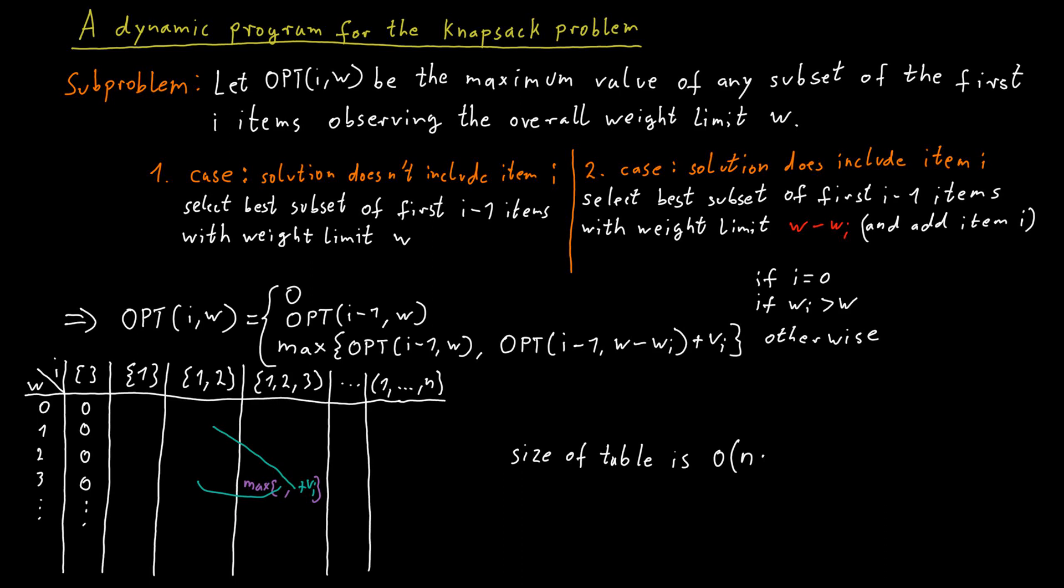But really, what is the largest possible weight limit that makes sense to consider? Well, we start with this capital W as an input to our problem instance. And that's the maximum number of rows we should be required to fill in for this table. So the running time of this algorithm is really in the order of n times capital W.